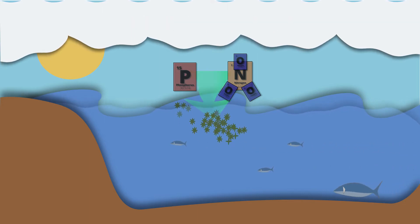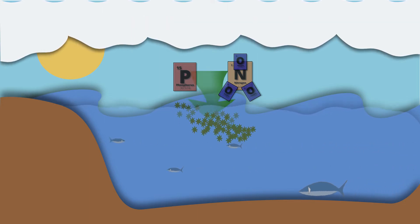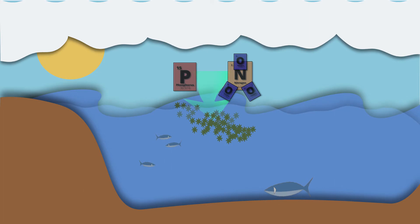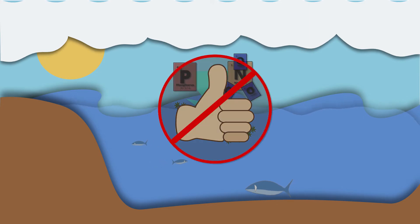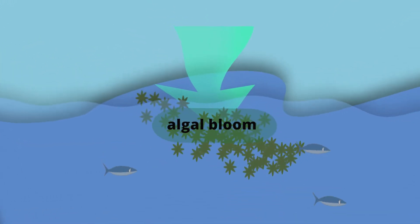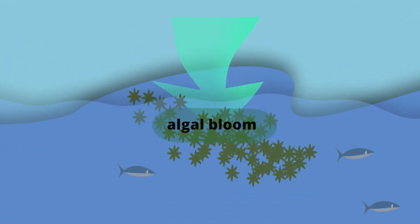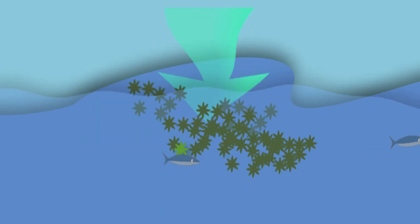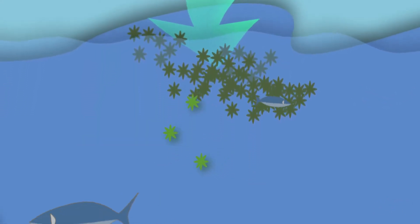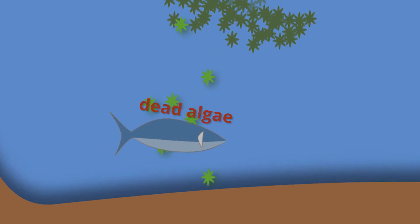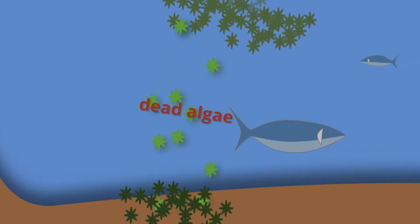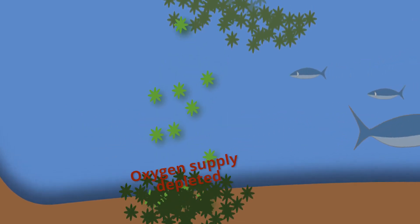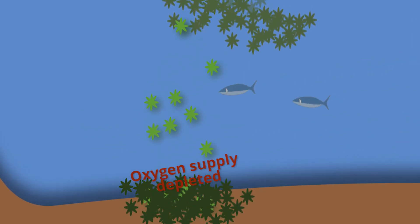These nutrients help the algae grow, and you'd think that's a good thing, but an excess growth of the algae — which we call an algal bloom — can actually harm the environment. Excess algae can cause the buildup of liver toxins in the water, which can be harmful to people who are swimming.